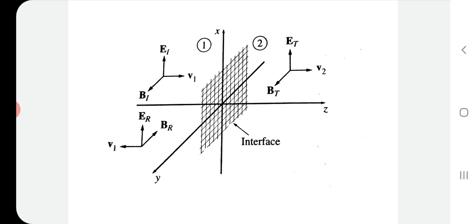At the interface, a part of the incident electromagnetic wave gets reflected and travels back in the negative z direction. This is shown by ER and BR, the electric field and magnetic field associated with the reflected wave. The electric field is in the positive x direction, while the magnetic field is in the negative y direction. As reflection occurs, the magnetic field changes direction, and the wave travels with velocity V1 in the negative z direction away from the interface.